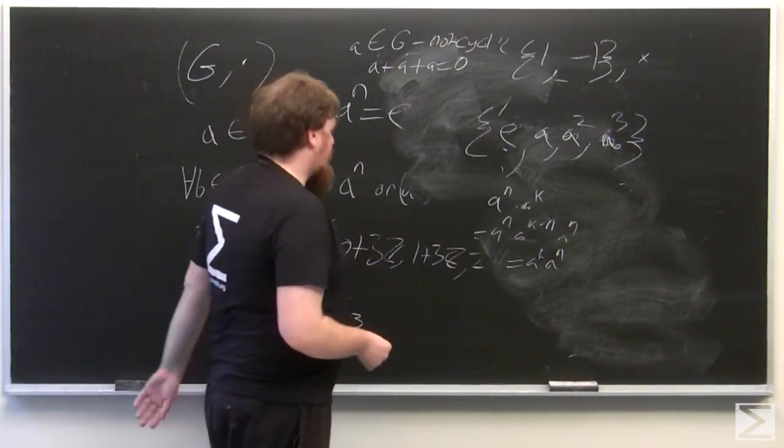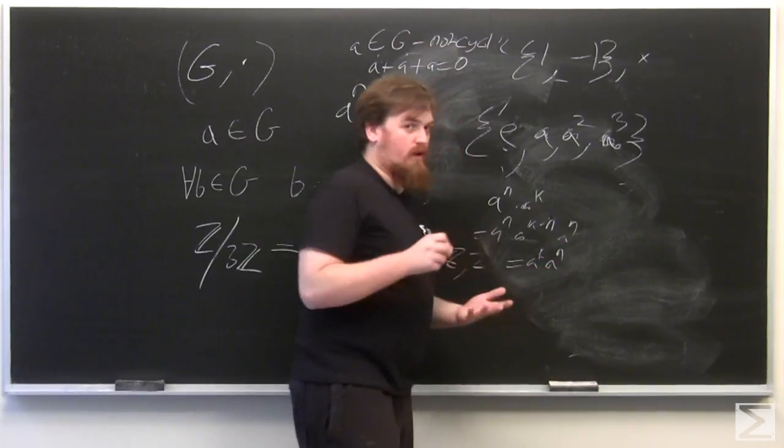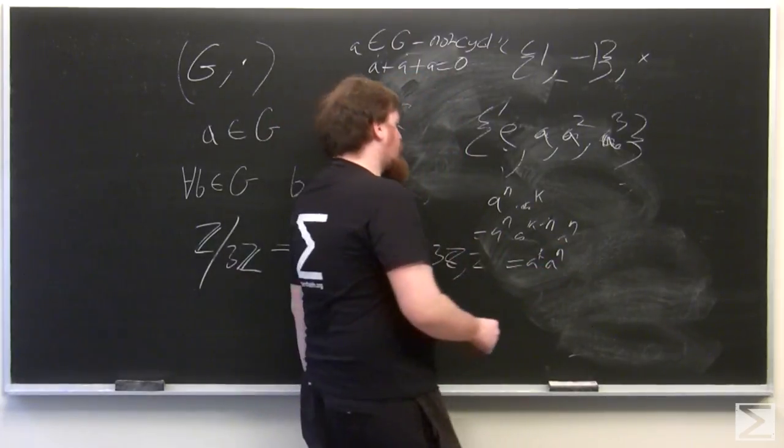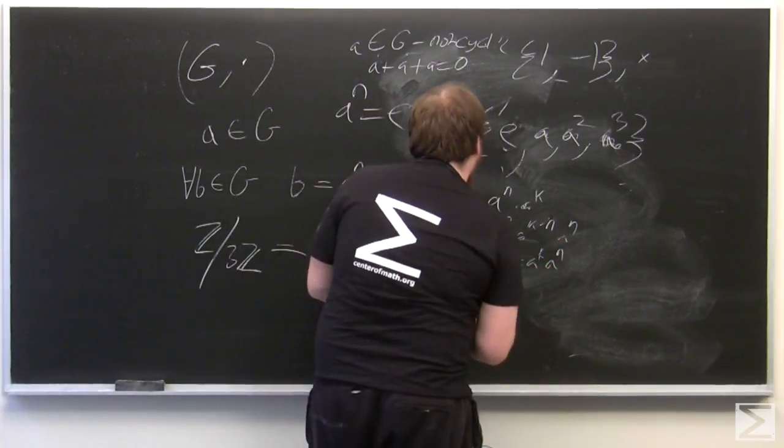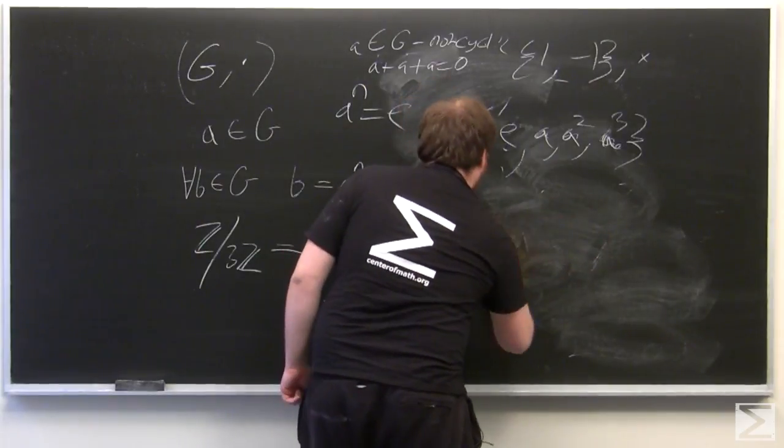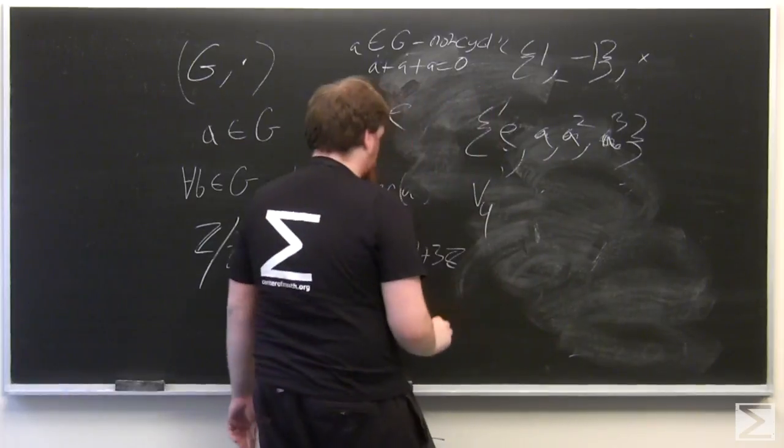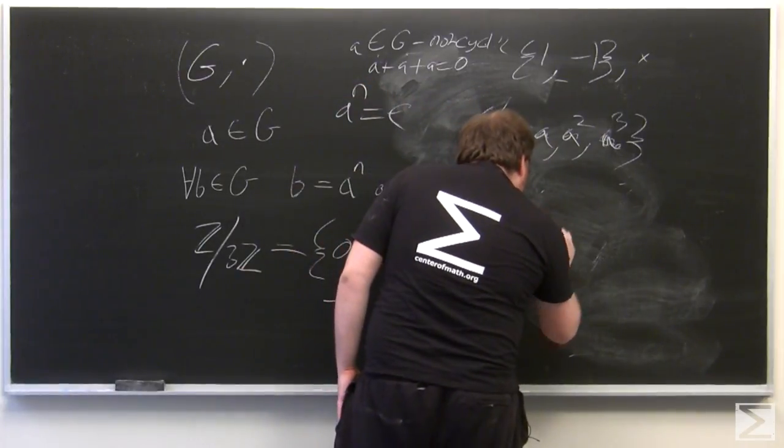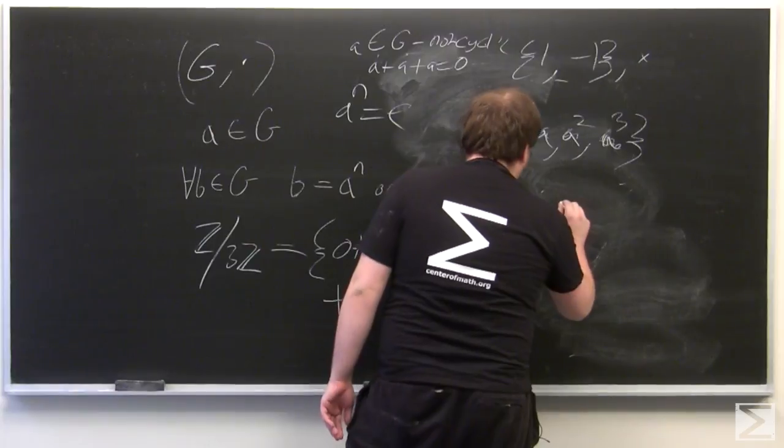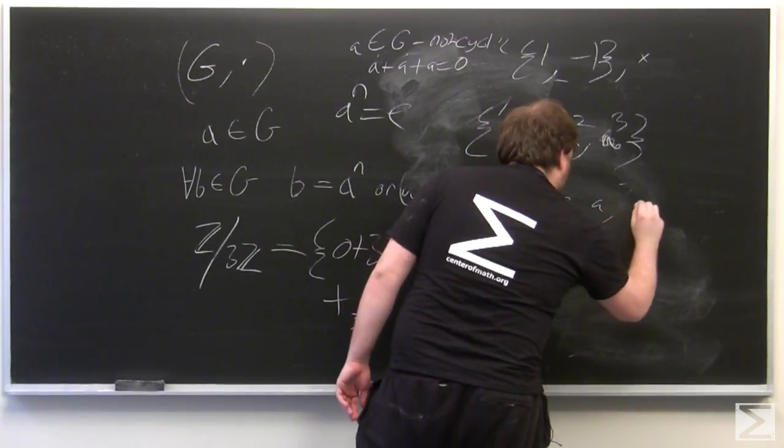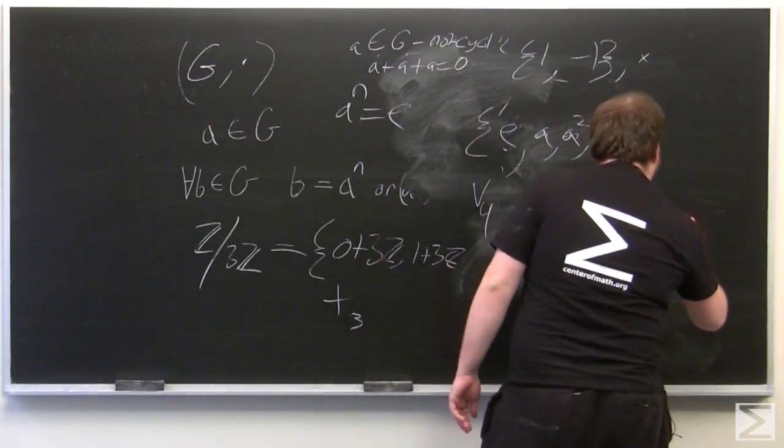So a group which isn't cyclic obviously has to be generated by more than one element. For example, we can look at a group called the Klein four group, which is written V4 for Vierergruppe. So this has elements called e, a, b, and ab.